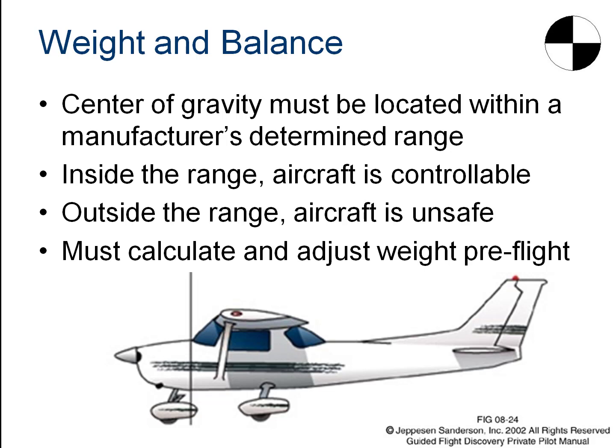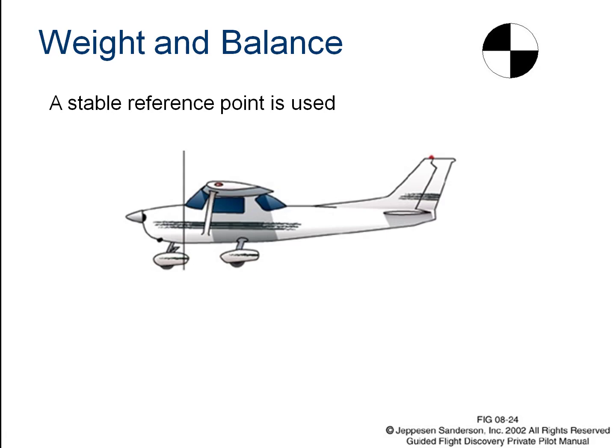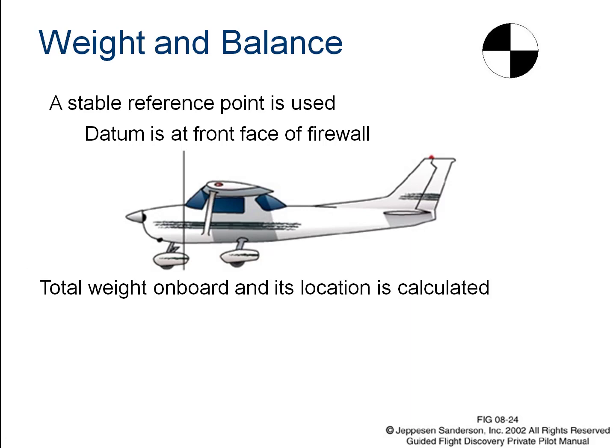We always have to calculate center of gravity when performing weight and balance. When you take off on an airliner, a ground crew member hands the pilot a paper with the weight of cargo, fuel, and people — and the pilot does math to confirm weight and balance is within limits. For the calculation, we need a reference point called the datum. For a light airplane, the common datum is the firewall, and we measure the moment of rotation relative to it.